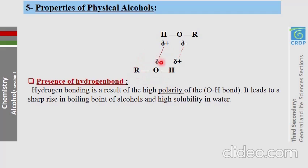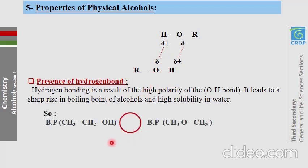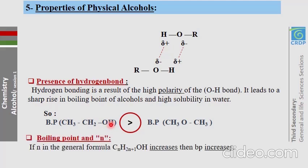When an alcohol is placed in water, hydrogen bonds help it dissolve. Comparing an alcohol with an ether of the same molecular weight, the alcohol has a higher boiling point due to its OH group. As the molecular weight of an alcohol increases, its boiling point also increases.